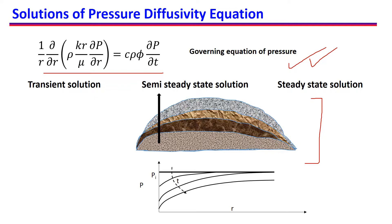Before we go on to applying this equation for a reservoir, we first want to understand what actually happens in a reservoir when we first find an oil reservoir. So this is an oil reservoir which we have found today. What we would do is put a producing well here in the reservoir, and initially the pressure in the reservoir is PI — so initially pressure everywhere is at equilibrium and it is PI.